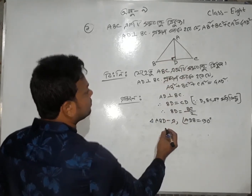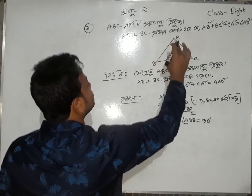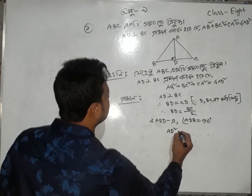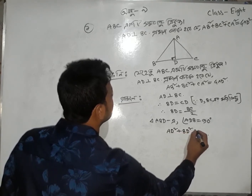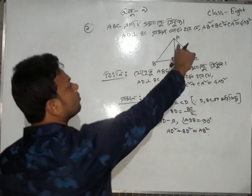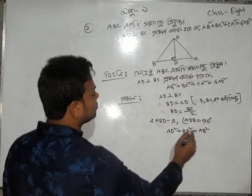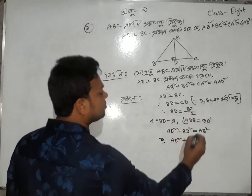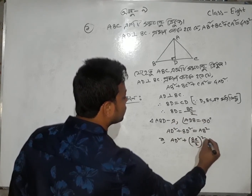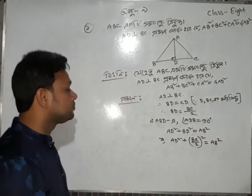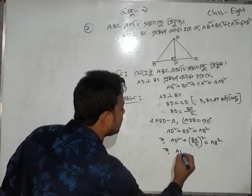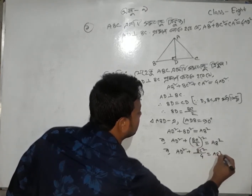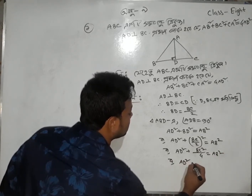Therefore we can write BD equal to BC by 2. That is, BD equals BC/2. In right triangle ABD, by the Pythagorean theorem: BD² + AD² = AB². That is, BD square plus AD square equals AB square. Therefore AD square: we know BD equals BC by 2, so (BC/2)² + AD² = AB².